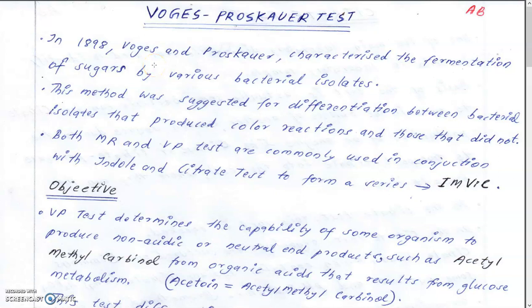Hi guys. Now we are dealing with the Voges-Proskauer test which is a part of IMViC. In 1898, Voges and Proskauer characterized the fermentation of sugars by various bacterial isolates and tried to classify them on the basis of fermented products they produced. This method was suggested for the differentiation of bacterial isolates which produced a color reaction and those that did not.